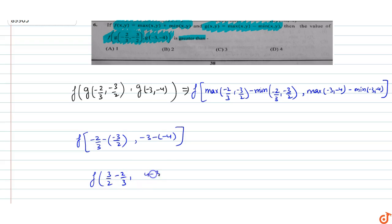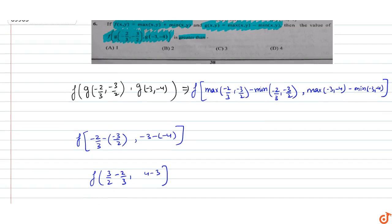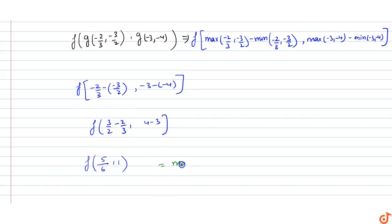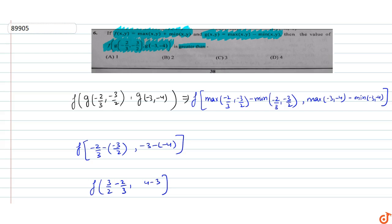We compute: 3 by 2 minus 2 by 3 equals 9 minus 4 over 6, which is 5 by 6. And 4 minus 3 equals 1. So we have f of 5 by 6, comma 1. Applying f, we get maximum of 5 by 6, 1 plus minimum of 5 by 6, 1 equals 1 plus 5 by 6 equals 11 by 6, which is approximately 1.99.